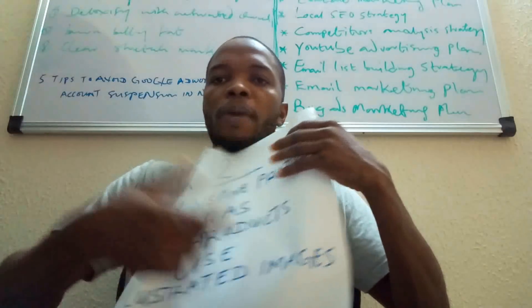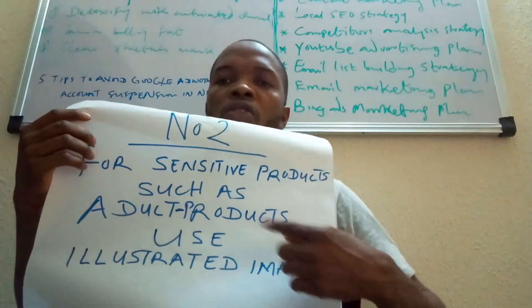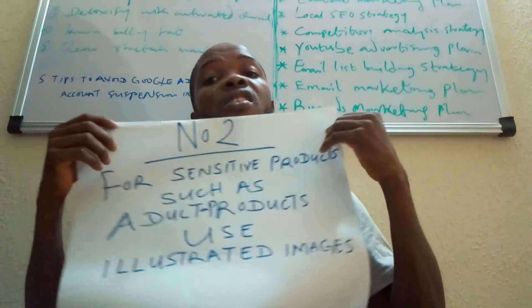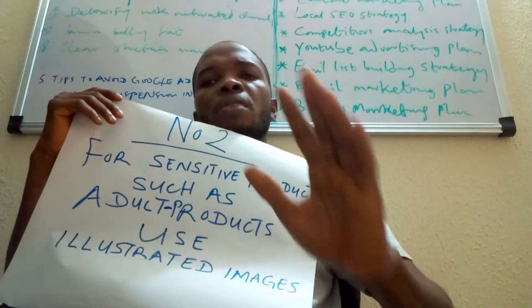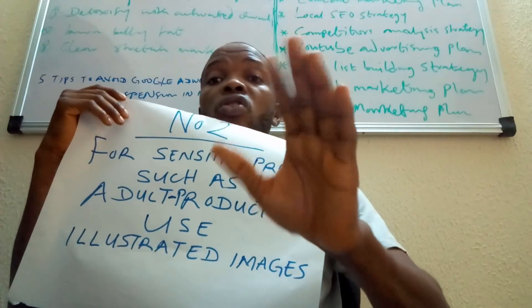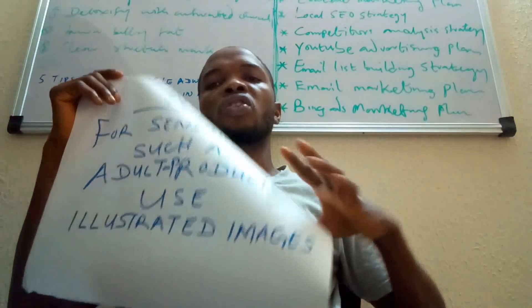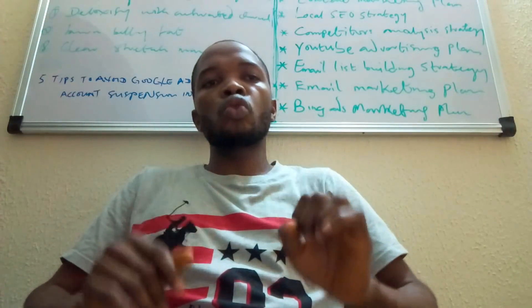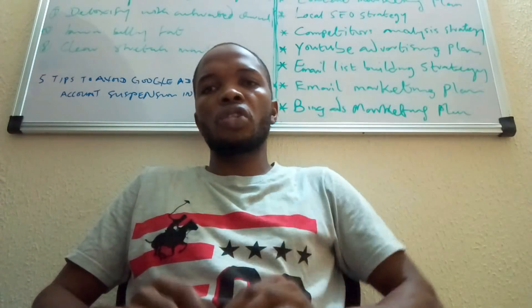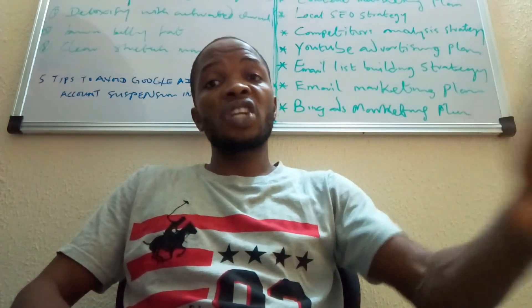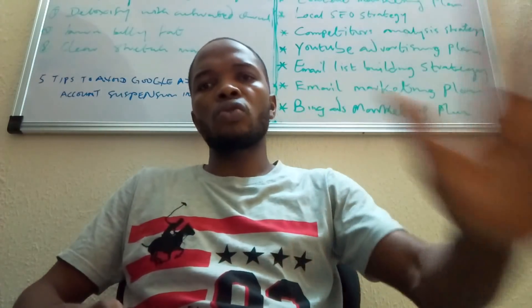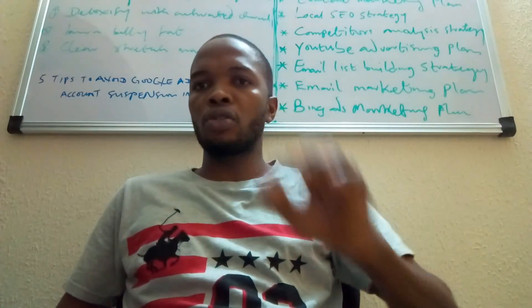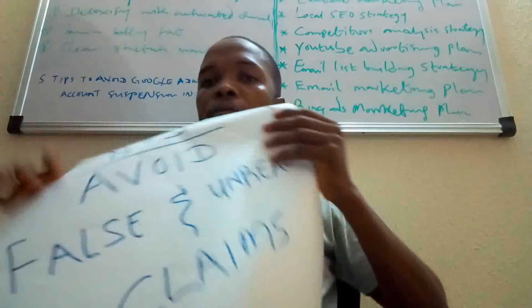Tip number two: for sensitive products, particularly adult-related products, use illustrated images. This is very important because a lot of people in Nigeria run AdWords on adult and sexual products and use real images of people, which is not allowed in AdWords. If you want to advertise something related to adult products, it is recommended to use illustrated images instead of actual images. Google recognizes that a landing page using illustrations is not portraying real images but using them to explain things to the user.